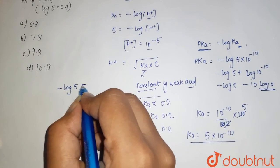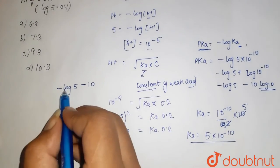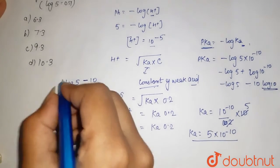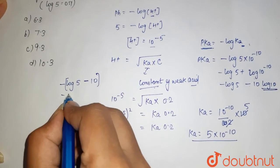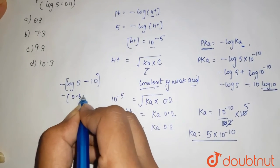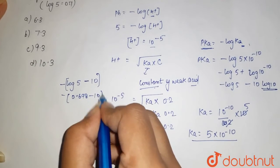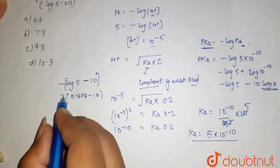this minus is outside, here it is minus 10. Now we will solve this. So here it is, this log 5 comes out to be 0.698 minus 10. So I multiply this minus sign inside, it is minus 0.698 plus 10.